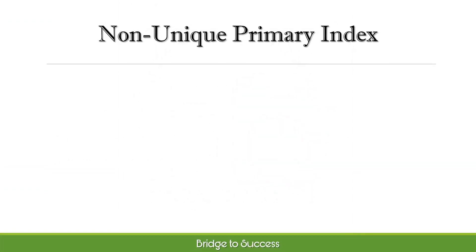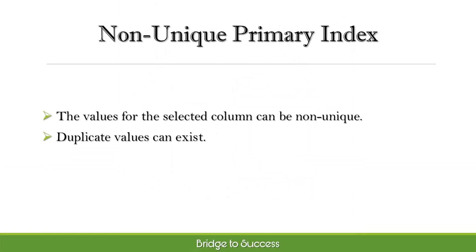A non-unique primary index (NUPI) means that the values for the selected column can be non-unique, and duplicate values can exist. You might pick a NUPI because that column may be more effective for query access and joins.